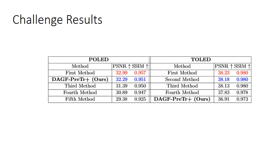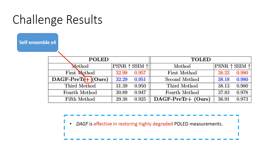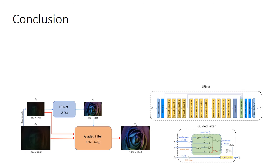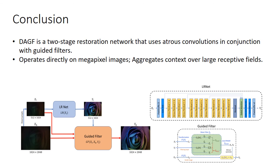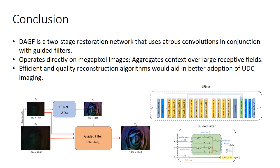Here are the results in the UDC challenge for both tracks. Plus indicates self-ensembling was used. Our method achieves second place in the POLED track while placing fifth in the TOLED track. Thus, DGF proves to be highly effective in restoring POLED measurements. Further improvements in architecture can be explored for the TOLED case. In this work, we present DGF, a two-stage restoration network that uses atrous convolutions in conjunction with a guided filter. It operates directly on megapixel images and aggregates context over large receptive fields. We believe that further research on efficient and quality reconstruction algorithms would aid in more widespread adoption of UDC imaging.